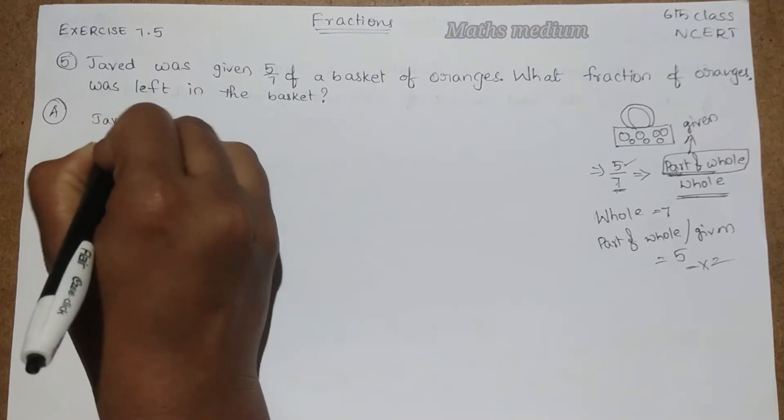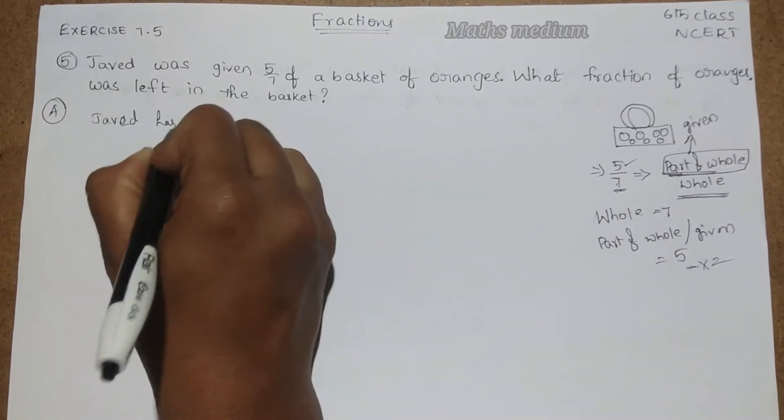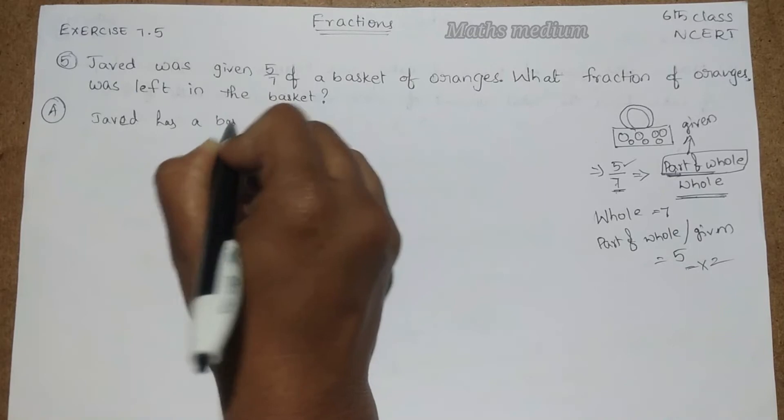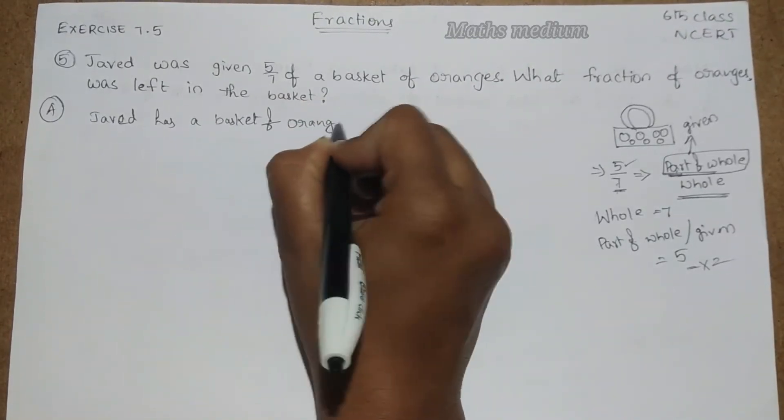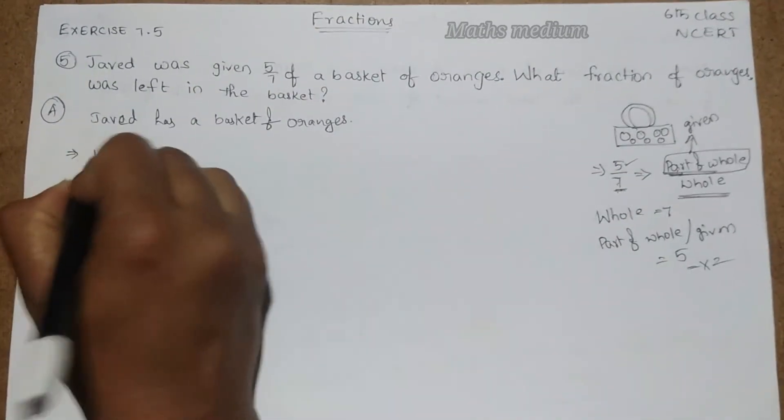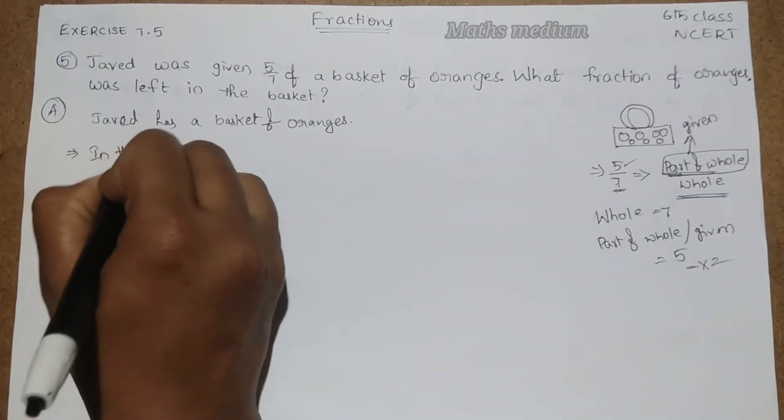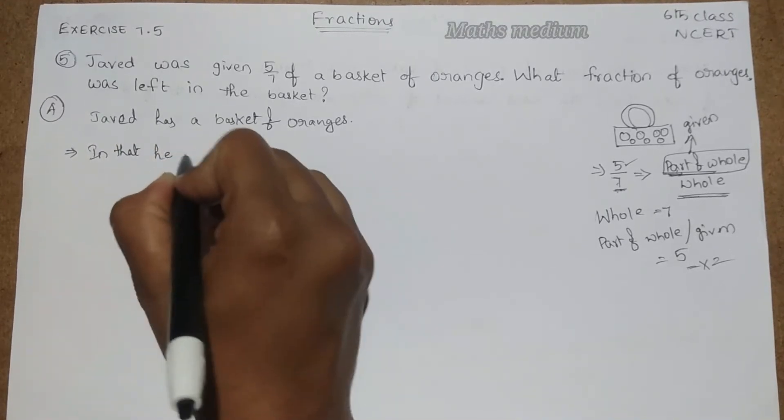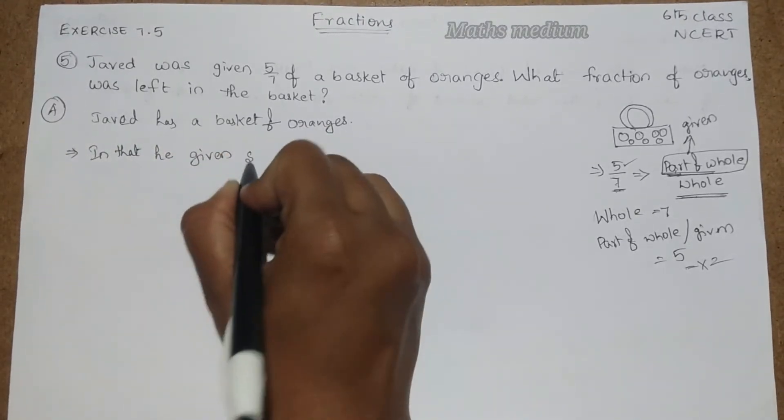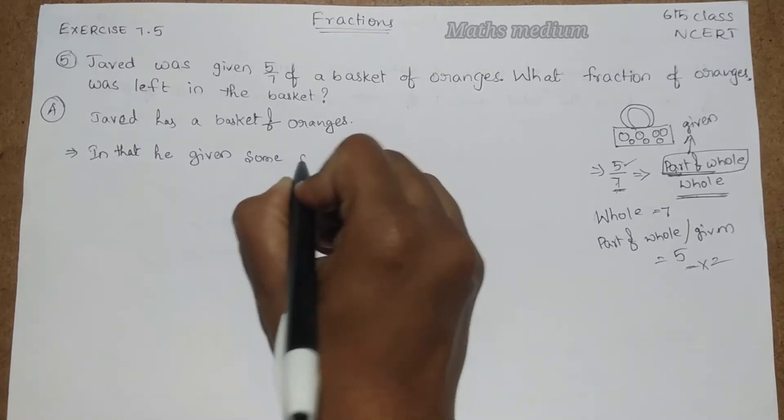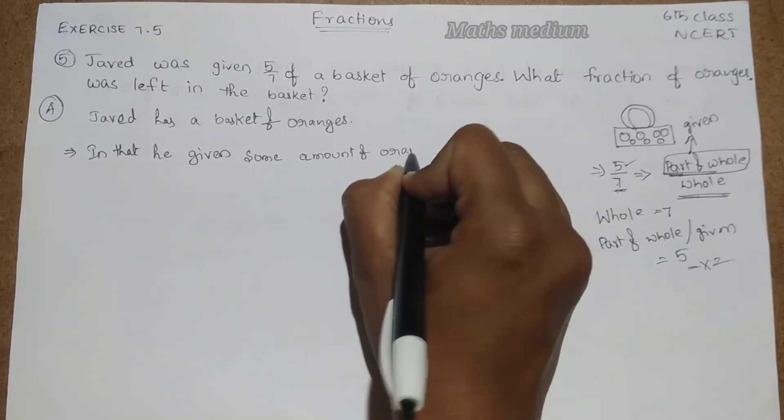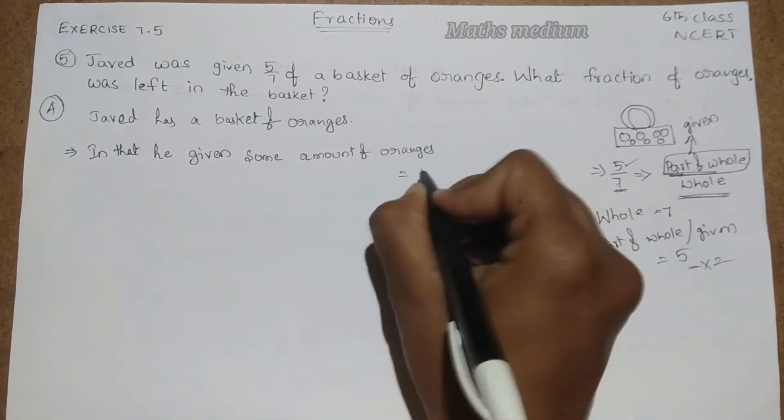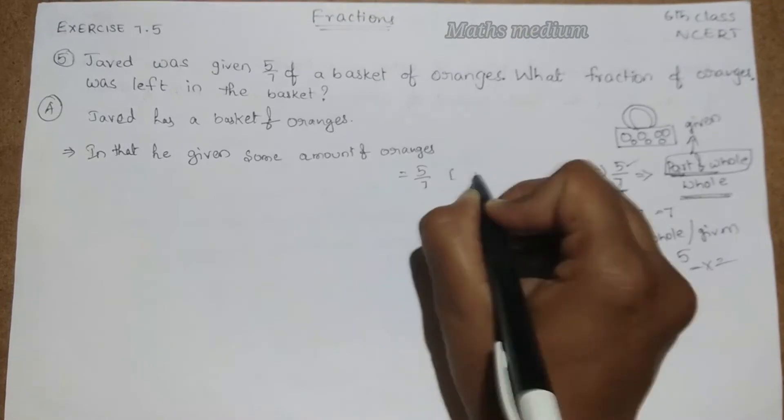Javed has a basket of oranges. In that, he given some amount of oranges, that is 5 by 7, in fractions.